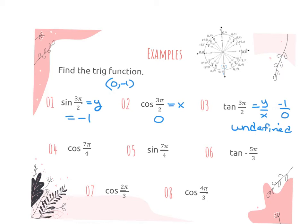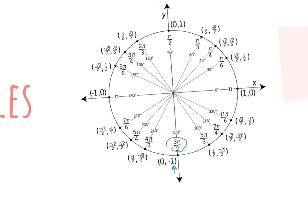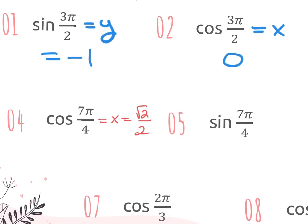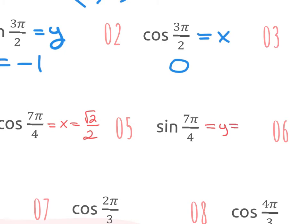Next we're going to do 7 pi over 4. If they give you an angle measure, either in degrees or radians, that's not between 0 and 360, or 0 and 2 pi, then you have to find the co-terminal — add and subtract 2 pi or 360. This one is on the unit circle. I can see that 7 pi over 4 is in quadrant 4. It's asking me to do cosine, which looks at x. So my answer is square root 2 over 2. For the same angle, the ordered pair has sine using y, so the answer is negative root 2 over 2.